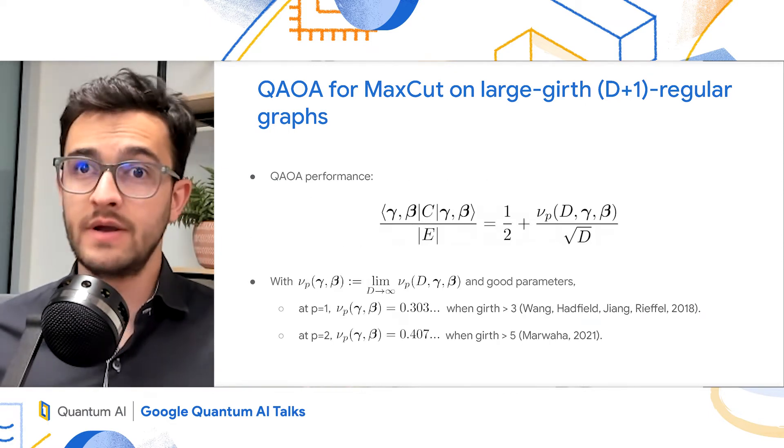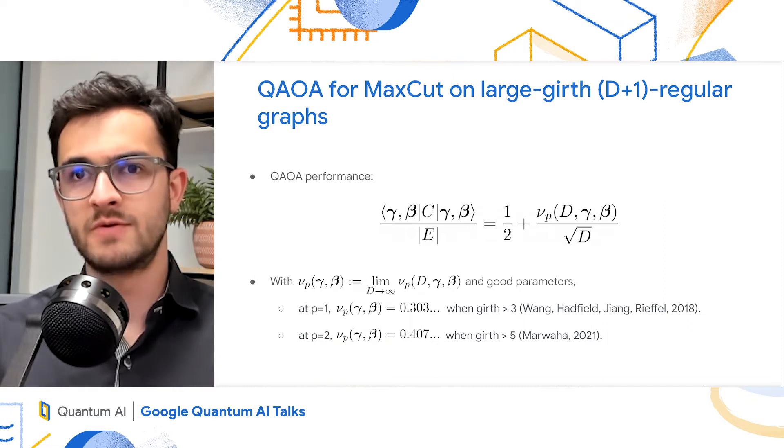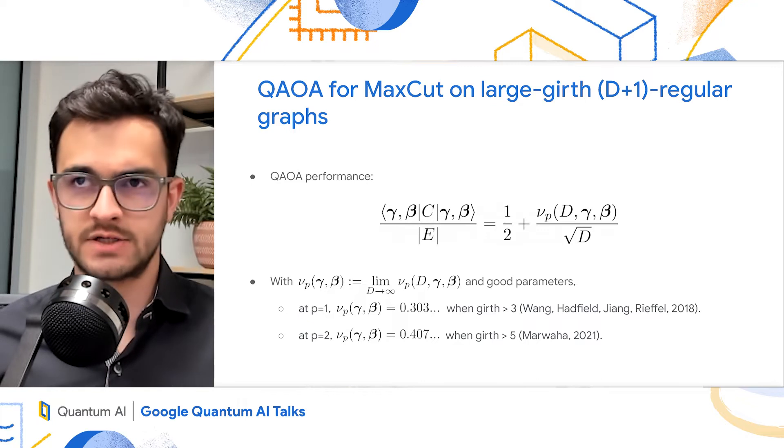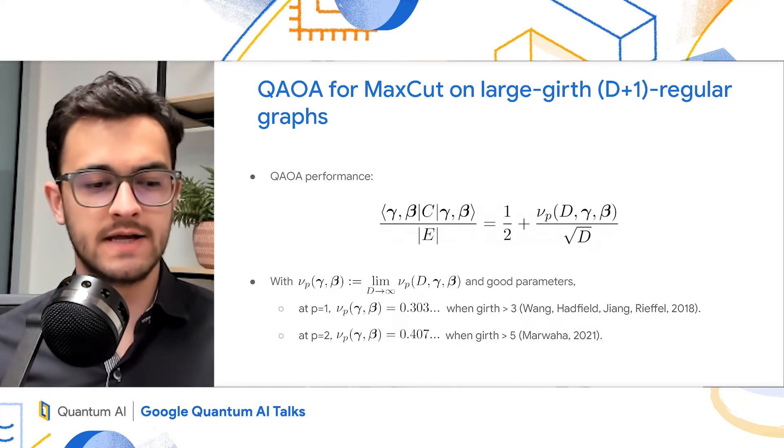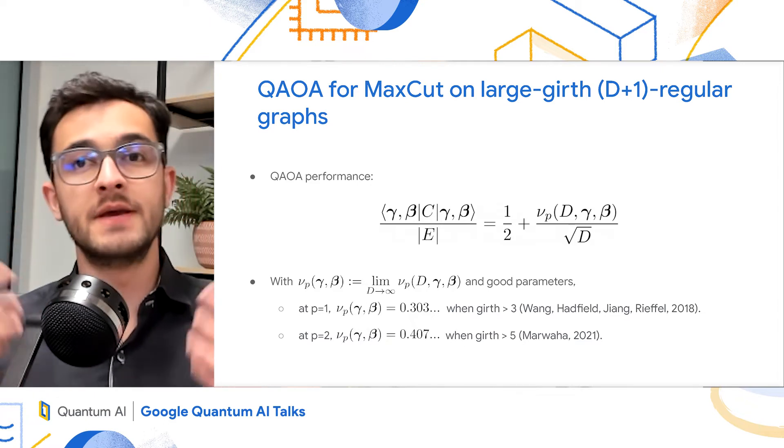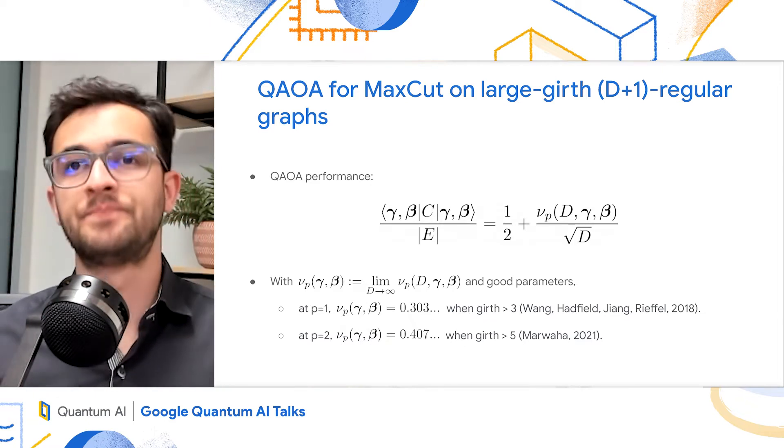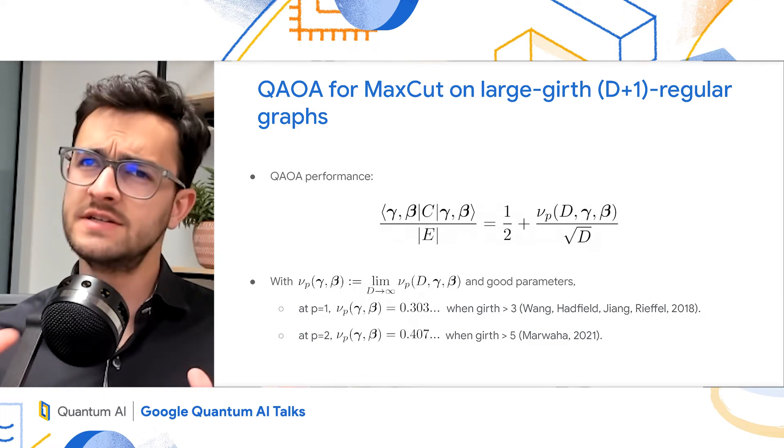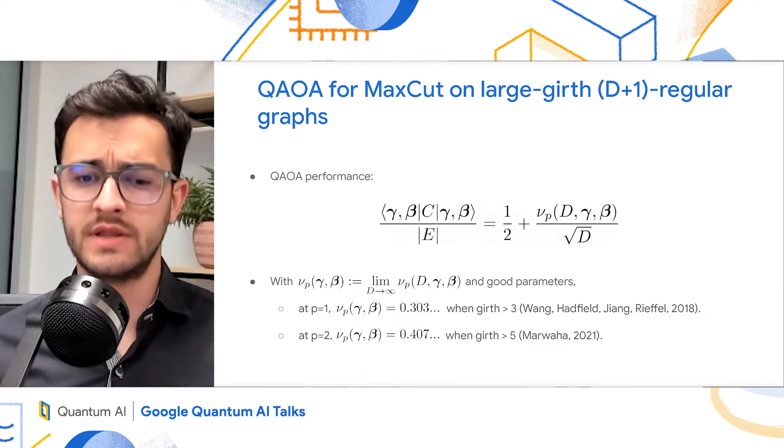Now, applying the QAOA to this problem, we're going to refer to its performance by nu_p. So again, it's this numerator in the cut fraction. And it's already known in the d to infinity limit, with appropriate parameters, that p equals one, the QAOA gets 0.303. So again, you can see there's a lot of similarities with the SK model.